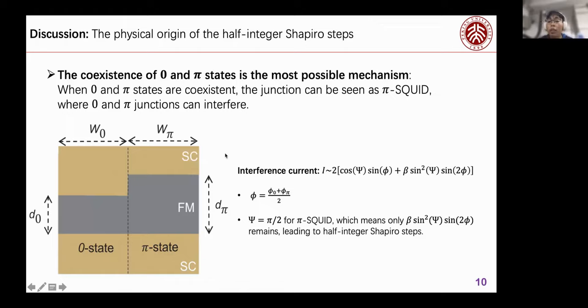After calculation, the interference current has this form, and φ is the average phase difference of zero and π junctions. And ψ will equal to π/2 for the π state, which means only the second term, which includes our second harmonic term, will remain. And this will lead to the half integer Shapiro steps.